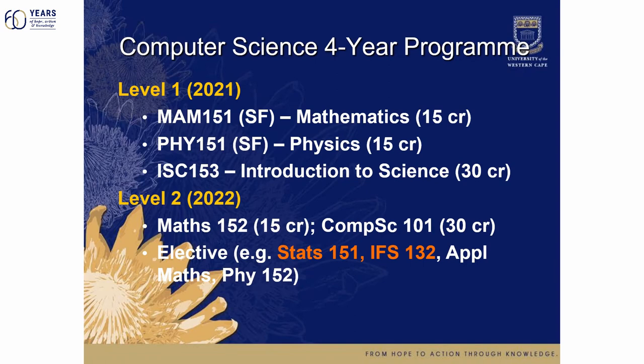This is the four-year program. In the four-year program you essentially do your first year over two years. In 2021 you will do a mathematics course, a physics course, and an introduction to science — so you don't yet do computer science. But in 2022, you will do more maths and then COS 101, which is our first year computer science program, plus various electives. Similarly to the earlier advice, we suggest you choose statistics and information systems as your electives.